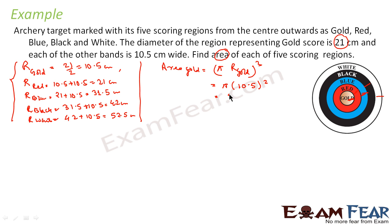And this if you solve, this comes out to be 346.5 and the unit will be centimeter square. So area of gold is done. Very simple.